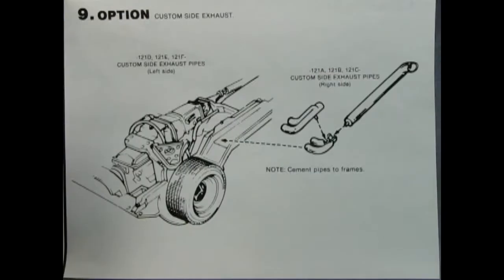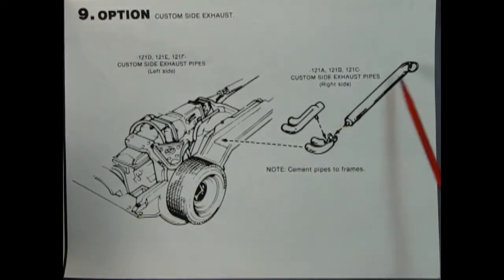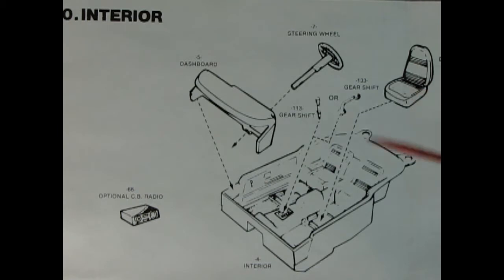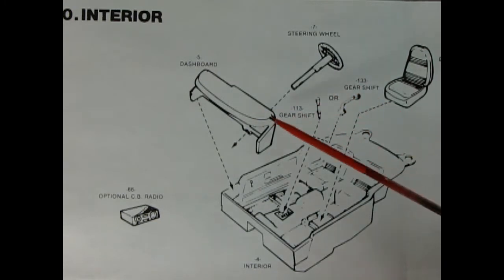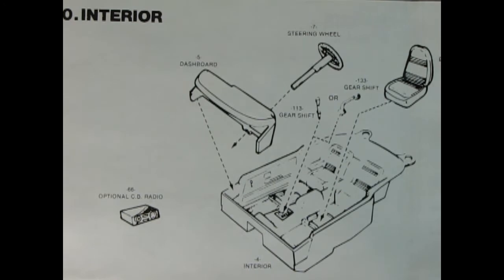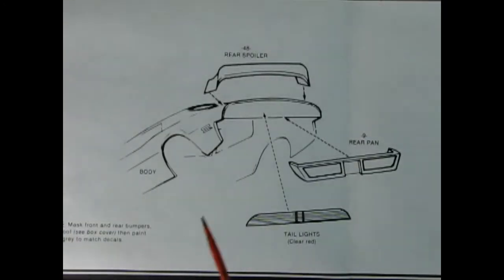Panel nine includes the options to put on these lake pipes. They're of course a three-piece manifold and you get them on both sides so again that's pretty cool. Now panel 10 shows our bucket seats going into the interior tub. You have a choice of gear shift levers, you got this nice steering wheel here and the dashboard and our optional CB radio. 10-4 good buddy.